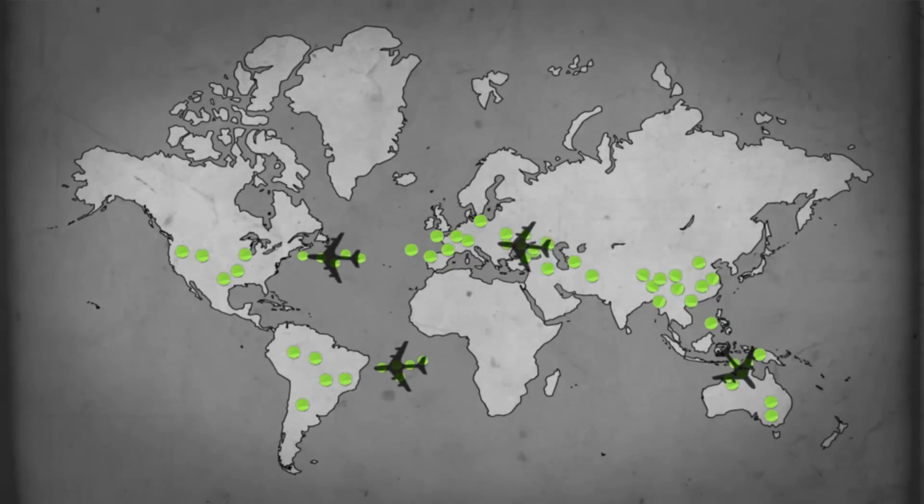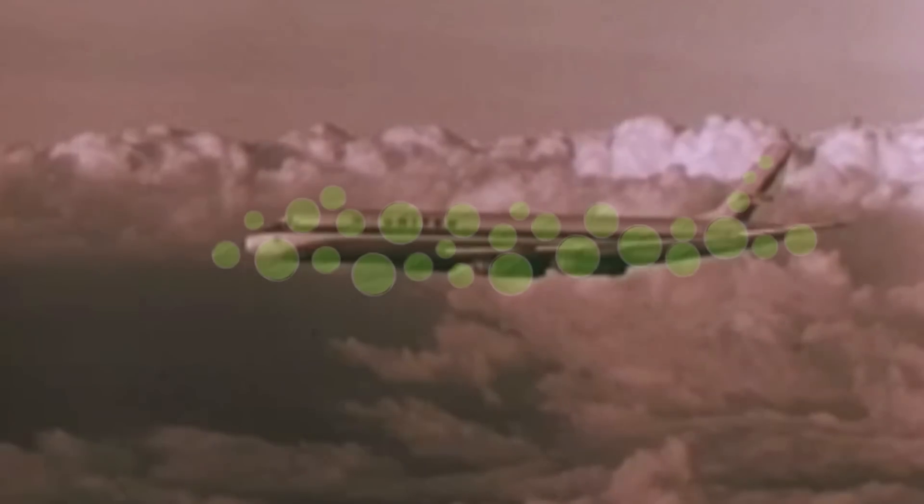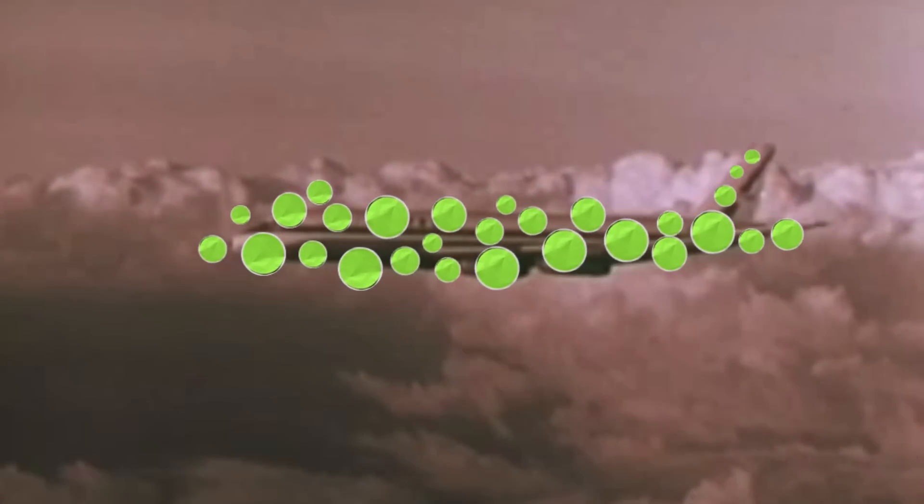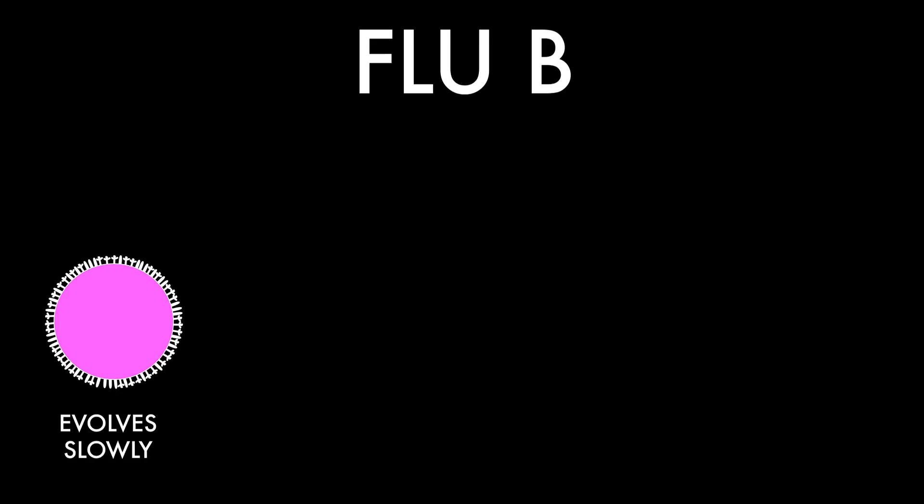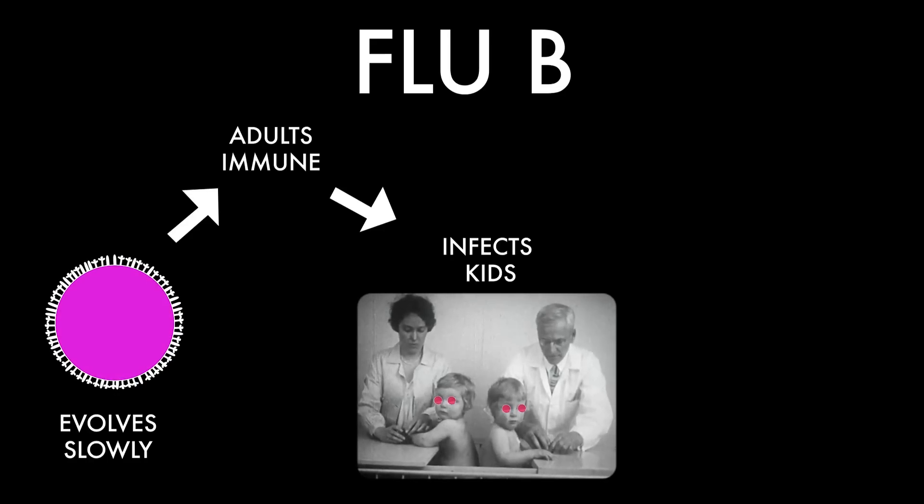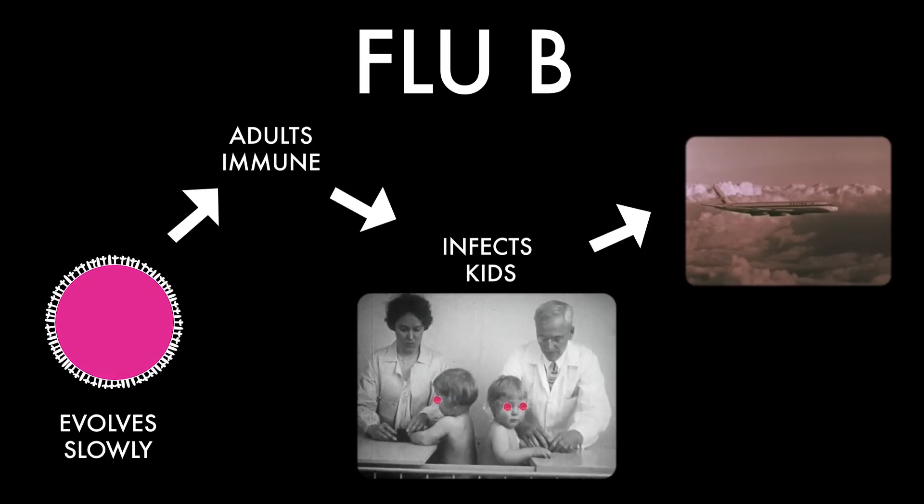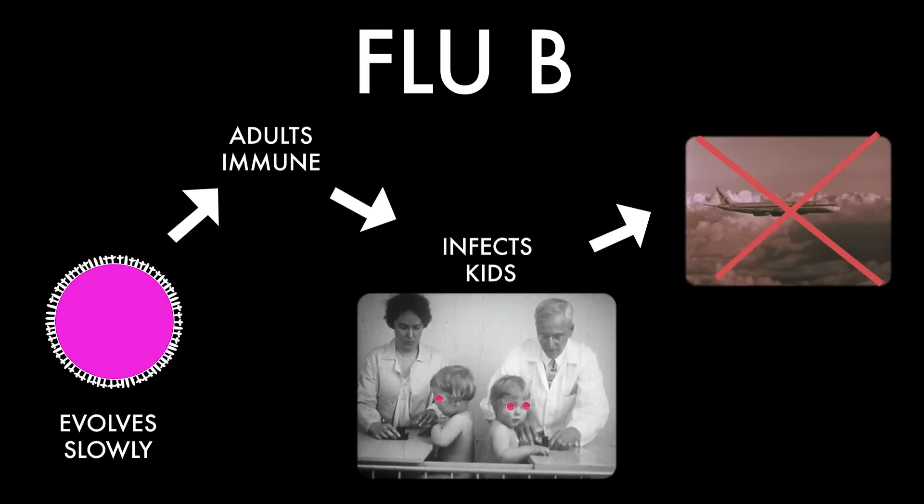The answer? Airplanes and the people who ride them. Adults get on airplanes and travel around the world and spread flu, whereas flu B infects primarily children. Kids don't get on airplanes as much and don't spread the virus about the world as quickly. Because flu B evolves more slowly and infects mostly kids, it travels when kids travel. And kids don't travel that much.